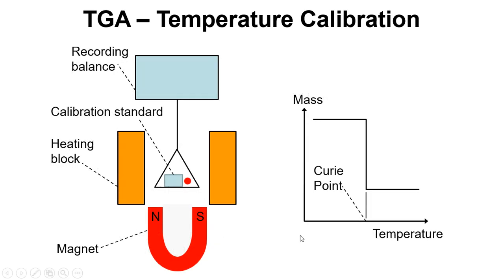If we look at the instrumentation, we have our standard here. This sample pan contains the material that is ferromagnetic, we've got a magnet, and so there's an additional force pulling down on this sample pan due to the magnetic material that's in here.